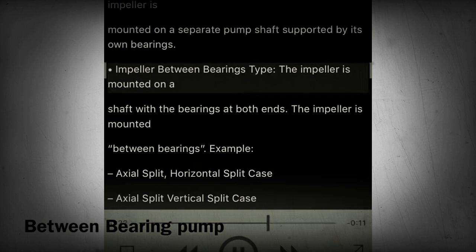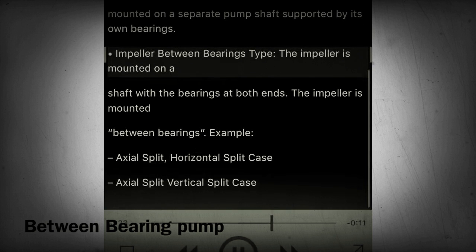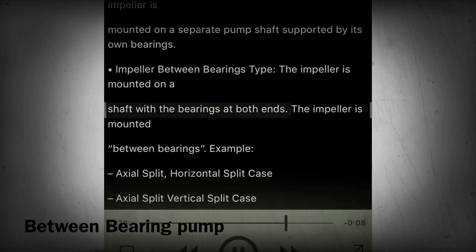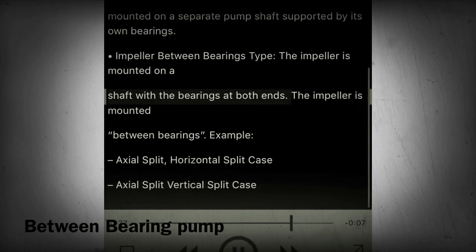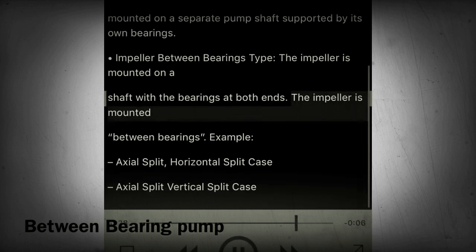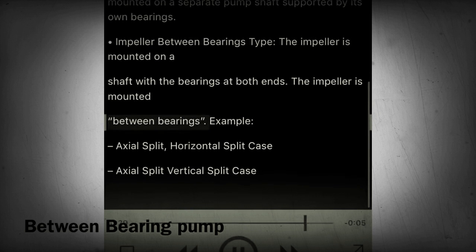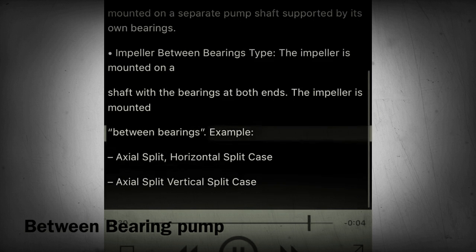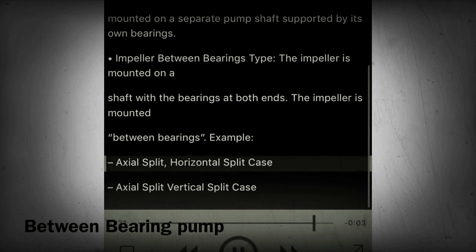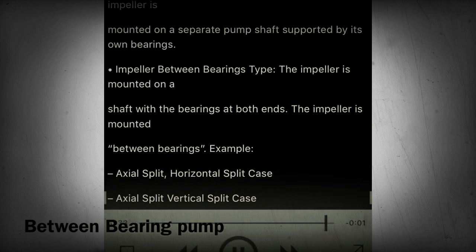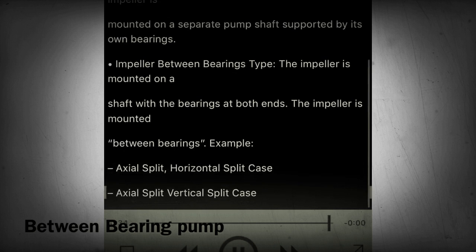Impeller between bearings type: the impeller is mounted on a shaft with the bearings at both ends. The impeller is mounted between the bearings. Examples include axial split, horizontal split case, and axial split vertical split case.